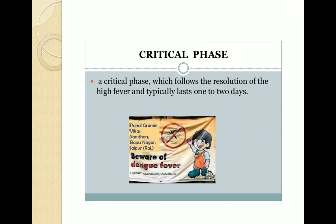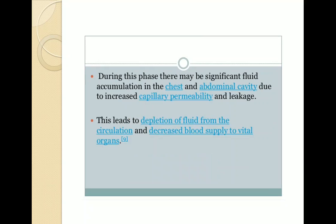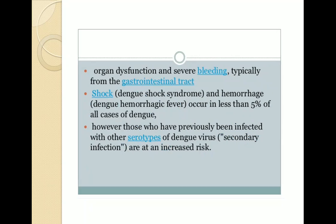The critical phase follows the resolution of fever and typically lasts 1 to 2 days. It includes significant fluid accumulation in the chest and abdominal cavity due to increased capillary permeability and leakage, leading to depletion of fluid from circulation and decreased blood supply to vital organs, resulting in low blood pressure. Other features include organ dysfunction and severe bleeding, typically from the GIT. Shock and hemorrhage occur in 5% of dengue cases; however, those previously infected with other dengue serotypes (secondary infection) are at increased risk.